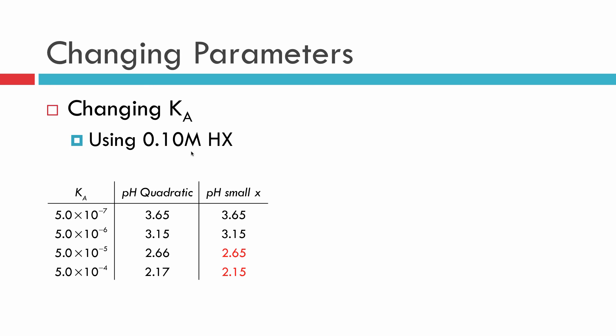So one of the things we're going to say is this. If we have a realistic size concentration, 0.1 or greater, then we're going to be able to make our cutoff that if our equilibrium constant is 10 to the minus 5th, the small x approximation is good enough. It's close enough to our real answer that we can use it.